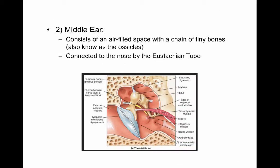The middle ear consists of an air-filled space with a chain of tiny bones, also known as the ossicles. The middle ear is connected to the nose by the eustachian tube — that's why you see an ear, nose, and throat doctor. It's all connected: your nose, your throat, and your ear through the eustachian tube. The middle ear space is an air-filled space, just like the ear canal.